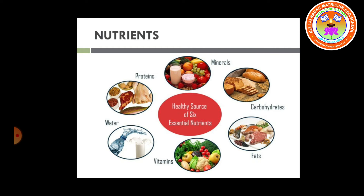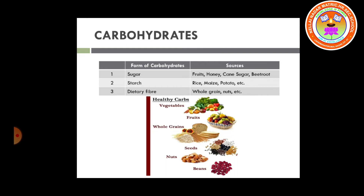There are about six major nutrients necessary for our body: carbohydrates, fats, vitamins, proteins, water, and minerals. These are the essential nutrients required for our body for being healthy. Now we will start with carbohydrates. Carbohydrates are the energy-giving component of food — when we take in carbohydrates, we get energy. Carbohydrate is an energy-giving component.